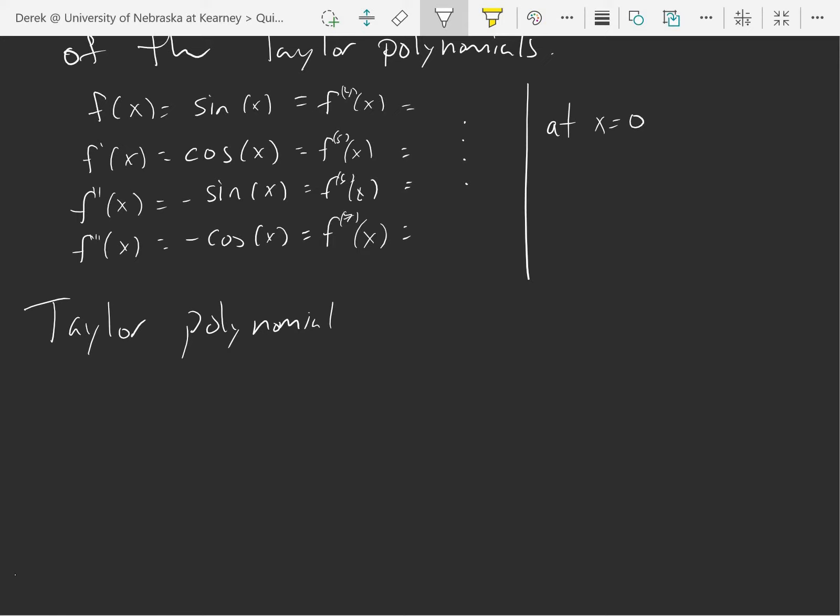Sine of zero is zero, so these are zero. The cosine of zero is one. The sine of zero is zero, so the negative sine of zero is zero, and then negative one. So my Taylor polynomial starts out...